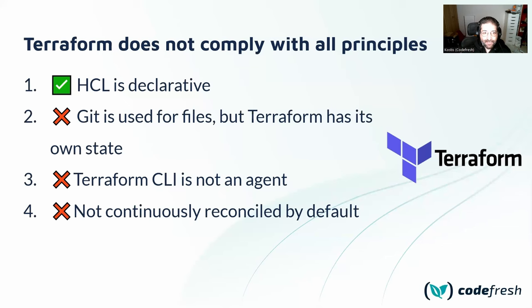If you've worked with Terraform, only the first principle is covered. Yes, Terraform uses HCL, which is a declarative language where you describe how your infrastructure should look. But all the other principles are not followed. Terraform uses Git, but only for storing HCL files. For state, Terraform has its own state — usually stored in an S3 bucket or Consul or another backend. It's not an agent you install that pulls information; you have to run it manually or from a CI system. And by default, Terraform doesn't have any continuous reconciliation.